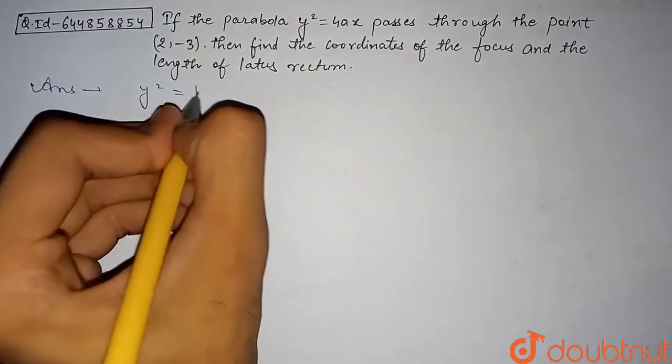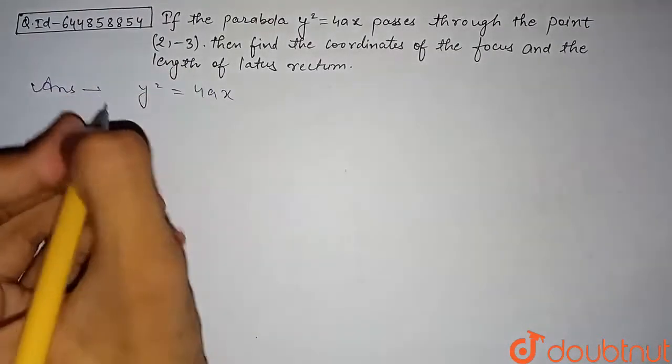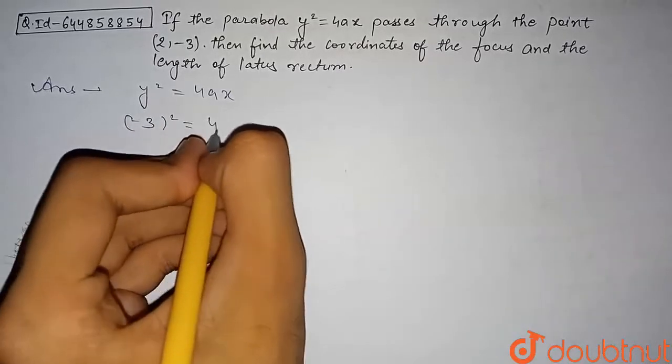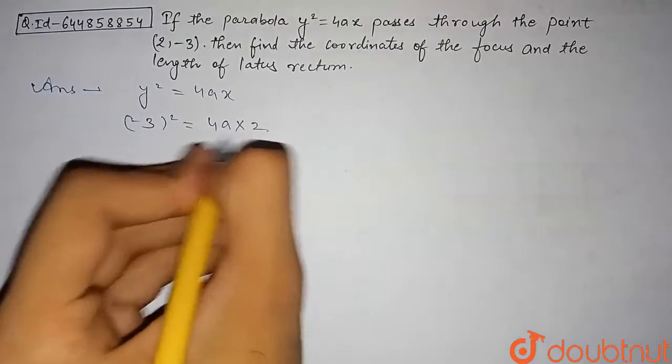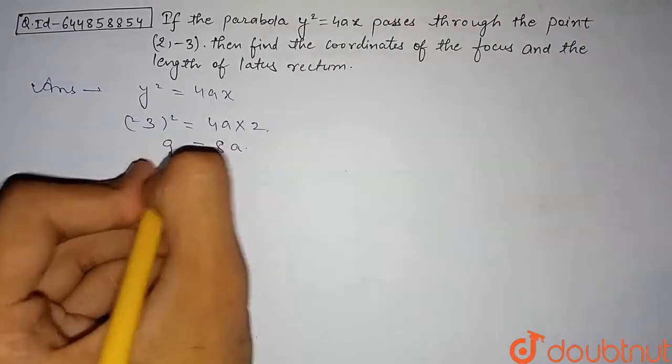So what we will do is substitute these points into this parabola equation. So we get (-3)² = 4a(2). So from here this will be 4 × 2 = 8a, and this will be equal to 9. So from here we get a = 9/8.